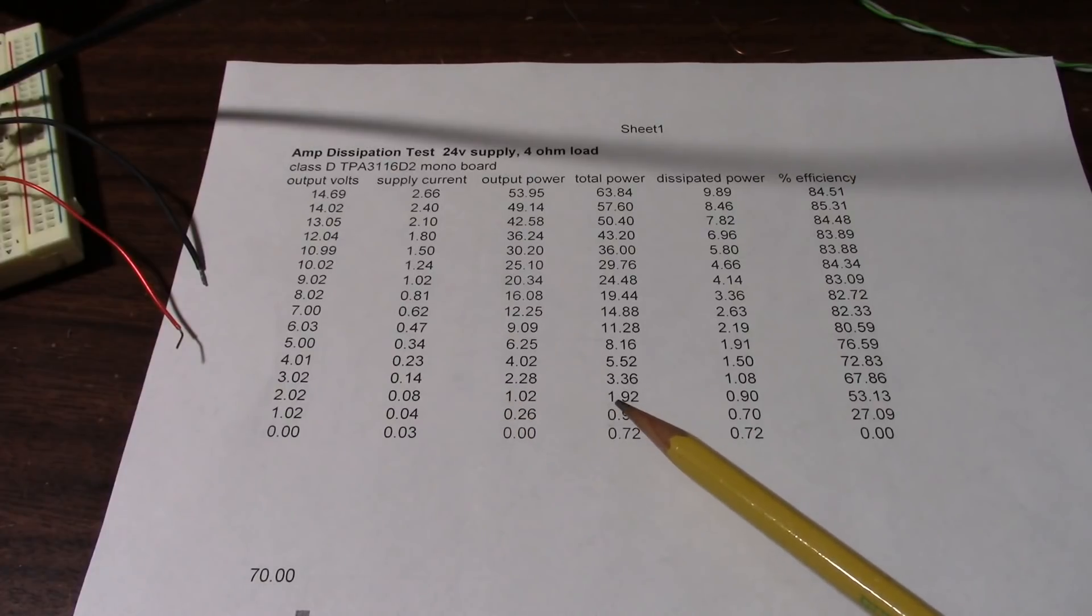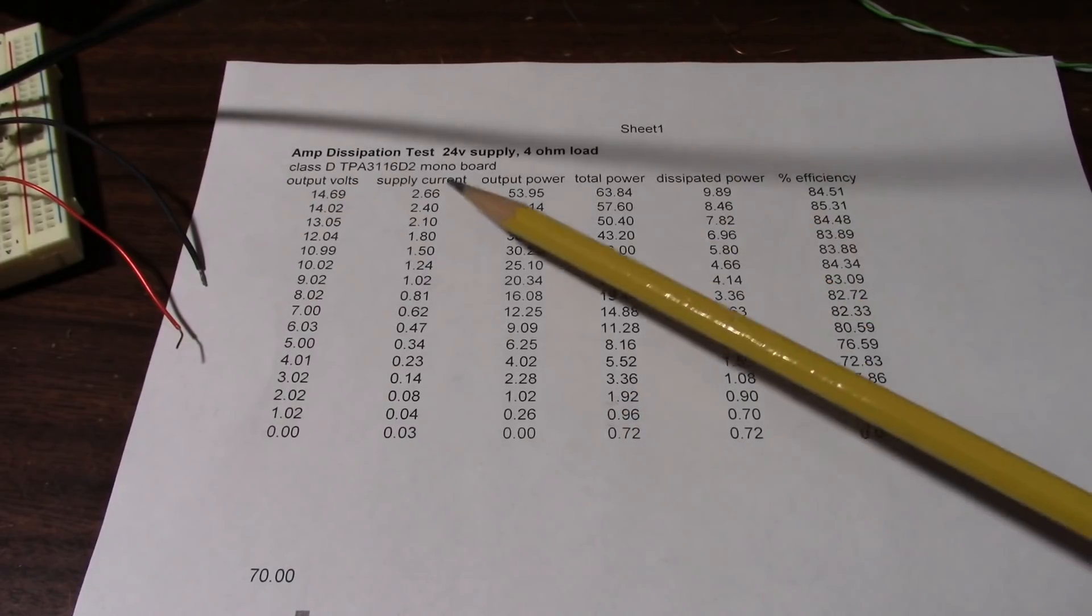But if you remember with the Class AB, we needed 16 watts of input power and 15 of that was being dissipated, leaving us with one watt. So here's what the Class D board did at one watt. It only needed just under two watts total power versus 16. Now, because we're looking at a percent of the actual output power, it'd be more fair to use the two watt line. The closest is 2.28, but still the total power was 3.36 watts.